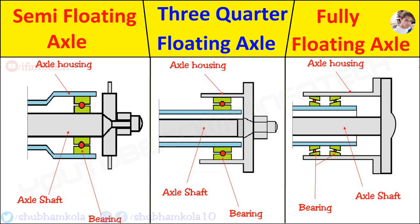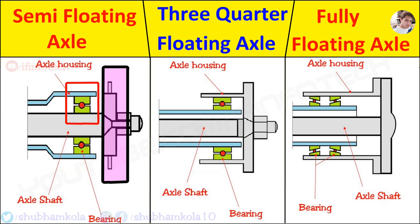First, the semi floating axle. In this type, the bearings are installed between the axle housing and axle shaft, and the wheel is fitted directly to the flange at the outer end of the shaft by bolts, while the inner end of the axle shaft is splined to the differential side gear. The axle shaft supports all load, side thrust, and driving torque.